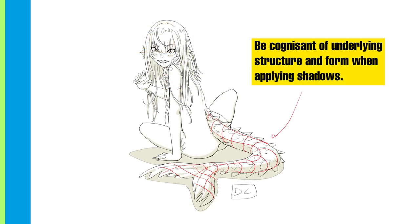Here's a quick tip if you're having trouble figuring out where the shadows should go: think of the underlying form of the character in terms of a simplified 3D shape and use that as a guide to drawing your shadows. You should always be cognizant of the underlying structure of your character so you can emphasize it when drawing your shadows.